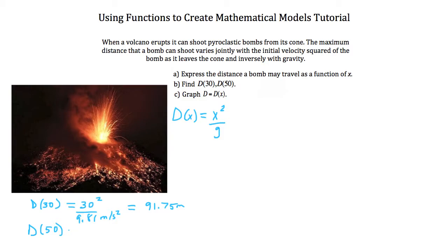If it were ejected at 50 meters per second, we want to take our x value squared divided by gravity, which is 9.81 meters per second squared. And we get 254.84 meters. Notice how drastic this difference is. Our speed hasn't doubled, but our distance that that pyroclastic bomb has traveled has doubled more than.